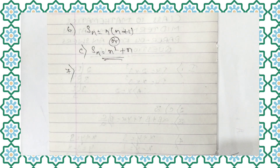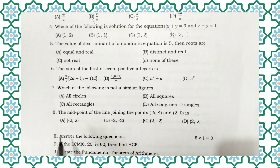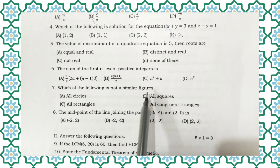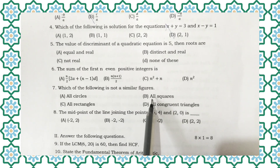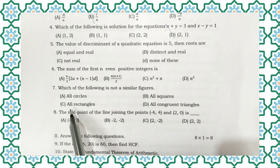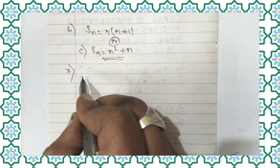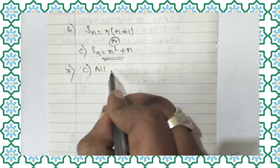Now let us move to question number 7. Which of the following is not a similar figure? All squares are similar, and all congruent triangles are similar. But all rectangles are not similar. So for the 7th question, the right option is option C — all rectangles.